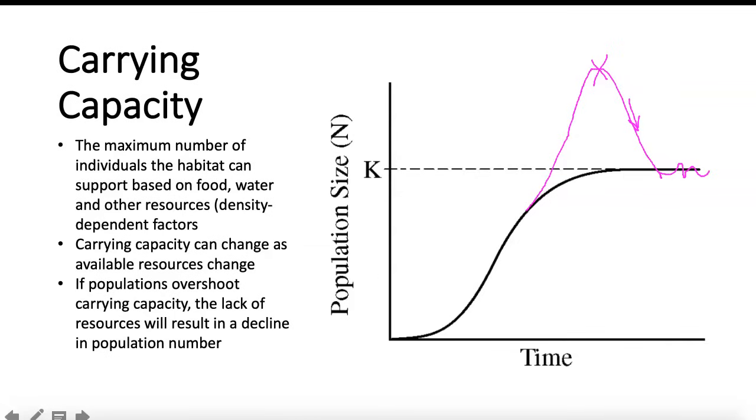And carrying capacity is going to be based on resources. So again, that's food, water, maybe space or availability of mates. So your density dependent factors that we learned about in unit two.